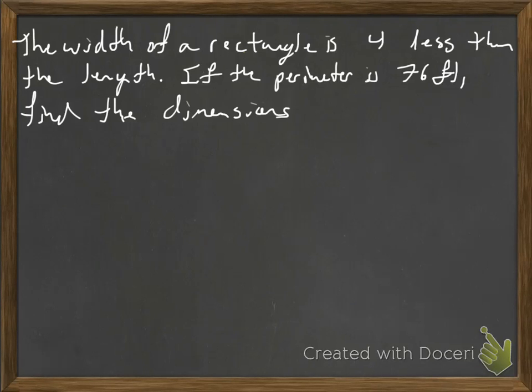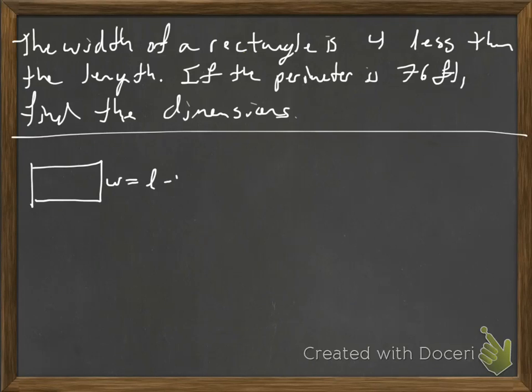So this time the width is in terms of the length. So we'll go ahead and draw ourselves a rectangle, and the width is in terms of the length, so the width is 4 less. So remember less was the backwards one, so we're going to do length minus 4, and then the length is the length.